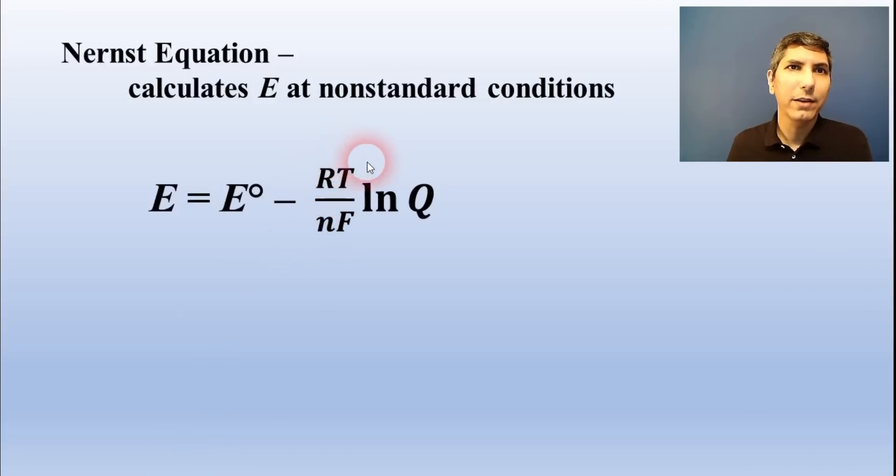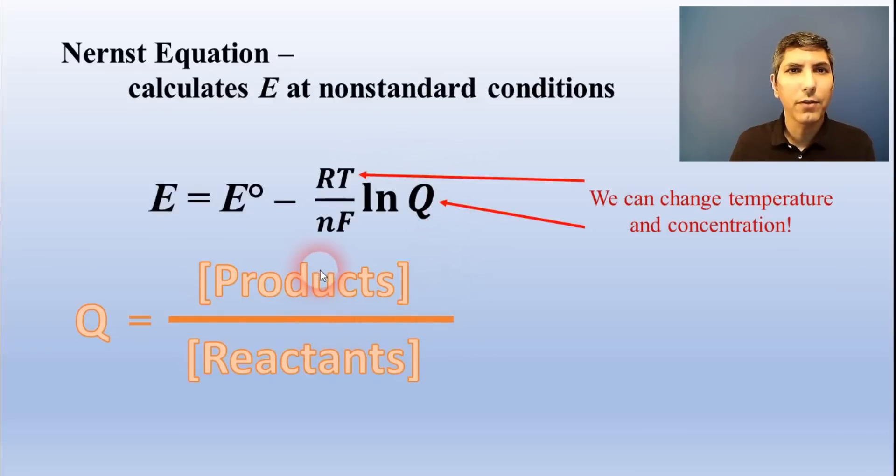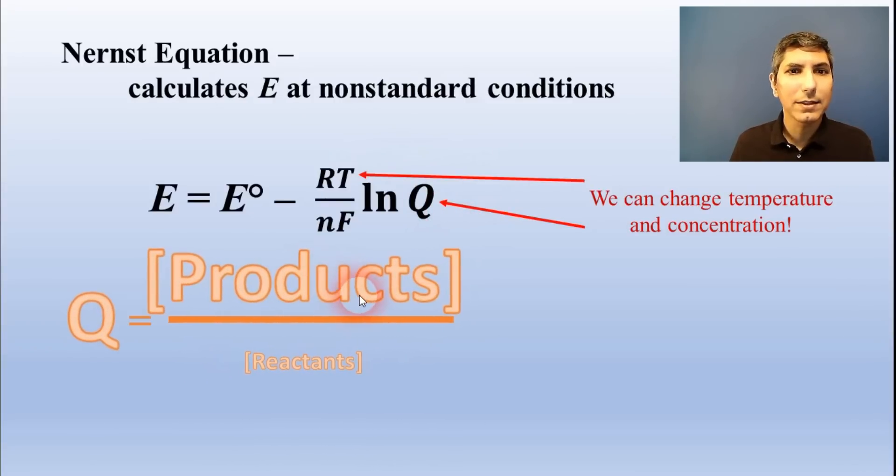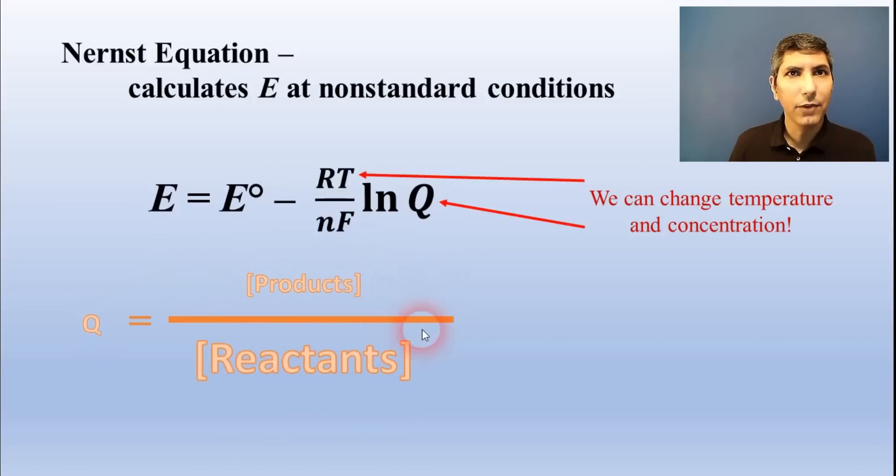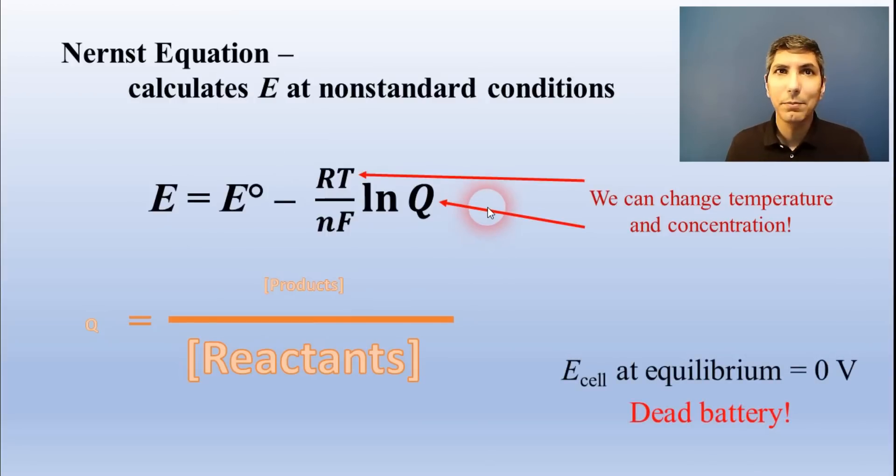Now, some of these values don't change in a reaction, but we can change the temperature and concentration. If we increase the concentration of the products or decrease the reactants, that increases the reaction quotient Q, and that lowers the voltage. Conversely, decreasing the concentration of the products or increasing the reactants will decrease the value of Q, and that raises the voltage. Now, this is not Le Chatelier's principle because the cell is not at equilibrium. In fact, a galvanic cell at equilibrium is a dead battery and has a voltage of zero.